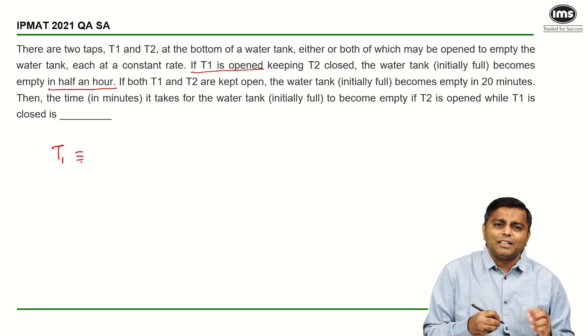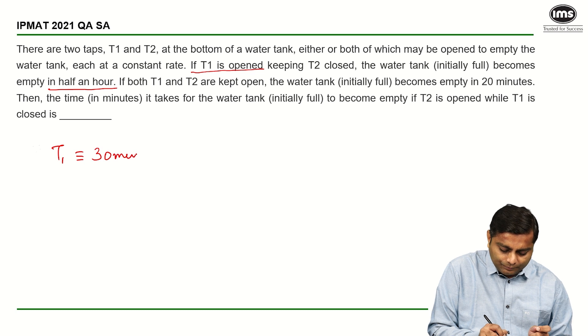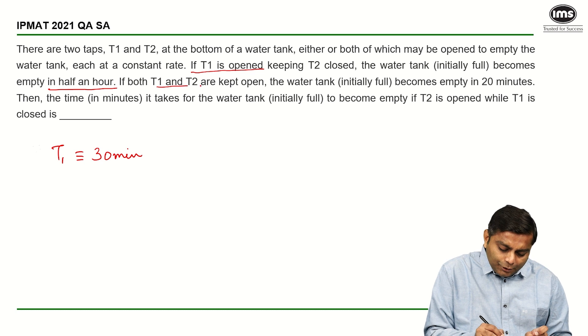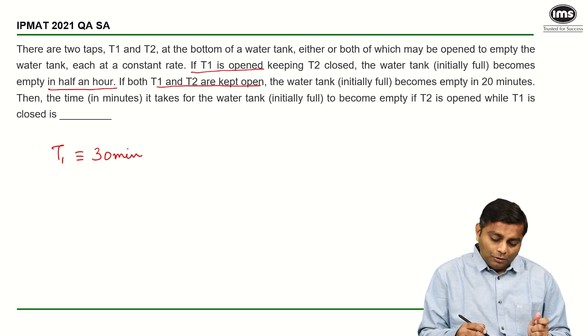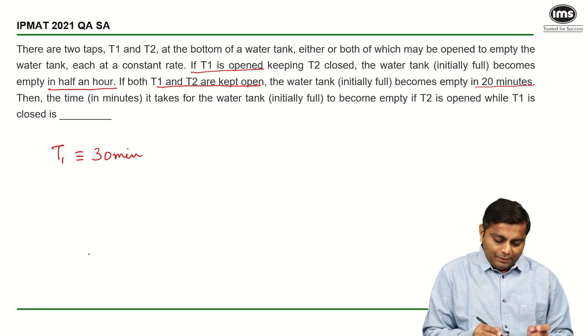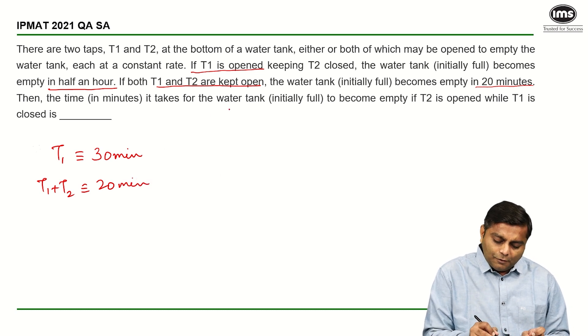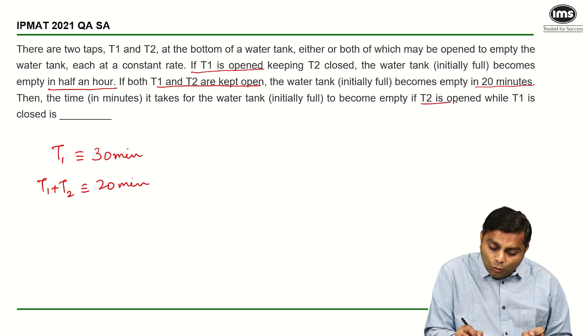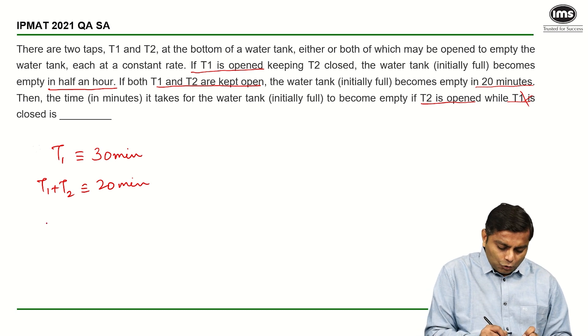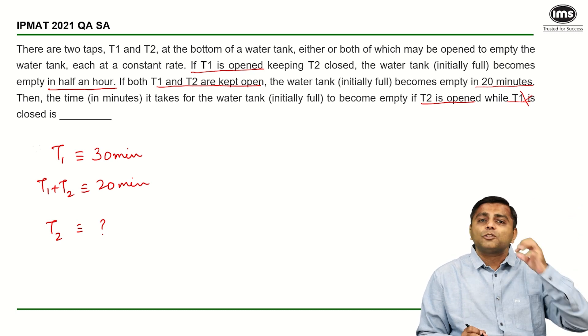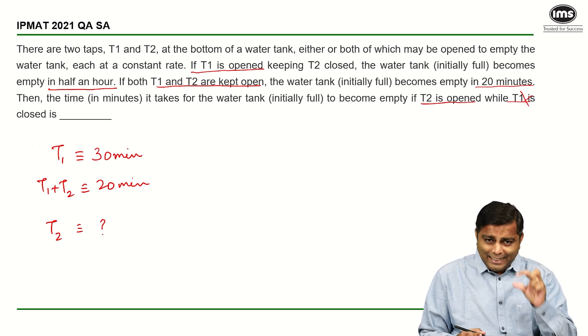What they have said is if T1 and T2 are both kept open, so T1 and T2 both are working now, the tank becomes empty in 20 minutes. So T1 plus T2 empties the whole tank in 20 minutes. What have they asked? Time in minutes it takes for the water tank which is full to become empty if T2 is opened while T1 is closed. T1 is closed means only T2 is working.